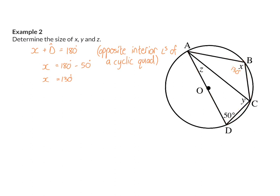For angle Y, I can see that angle Y is subtended from AD, which is the diameter of the circle, and because C is on the circumference of the circle, it will be 90 degrees. So angle Y equals 90 degrees, and my reason for that is angle in a semicircle.